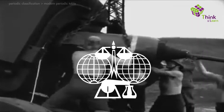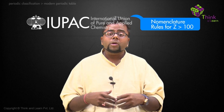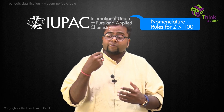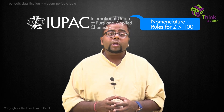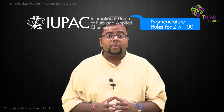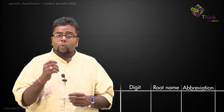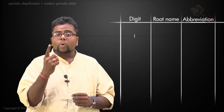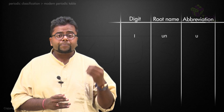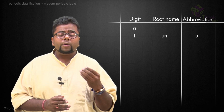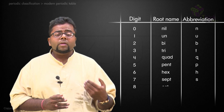What IUPAC did was come up with a very fine idea of nomenclature — assigning names to elements which have an atomic number more than 100. They gave us the nomenclature rules where they said that the number 1 would be denoted by 'un', 0 would be denoted by 'nil', and similarly you have 'bi', 'tri', and all.